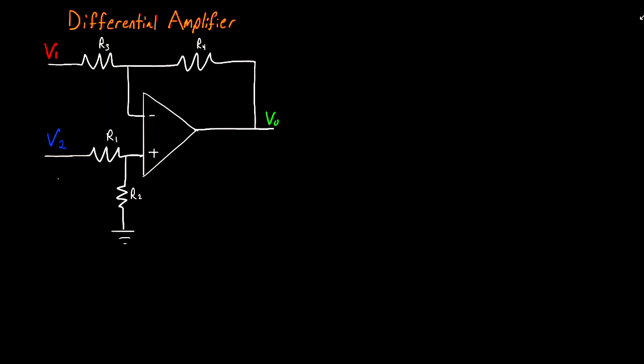So the first step, as always, is to define my component currents. I'm going to call this I1 and I'm going to call this I2. Because if we treat this as an ideal op amp, no current goes into the inputs of my op amp. So now that I've labeled my component currents, my next step is to label my node voltages.